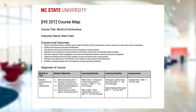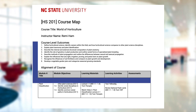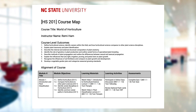A helpful way to remember how to align components in the course map is to visualize an L shape. Module objectives align with course objectives, and all other columns align with the module objectives. You can see that the instructor has noted alignment for every component of the course.